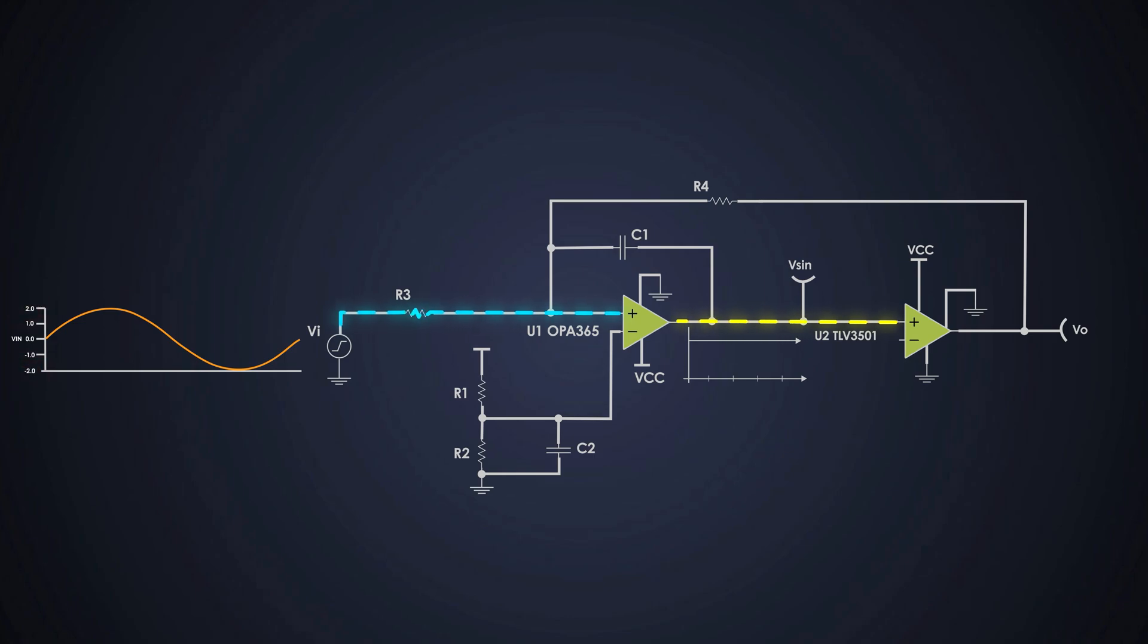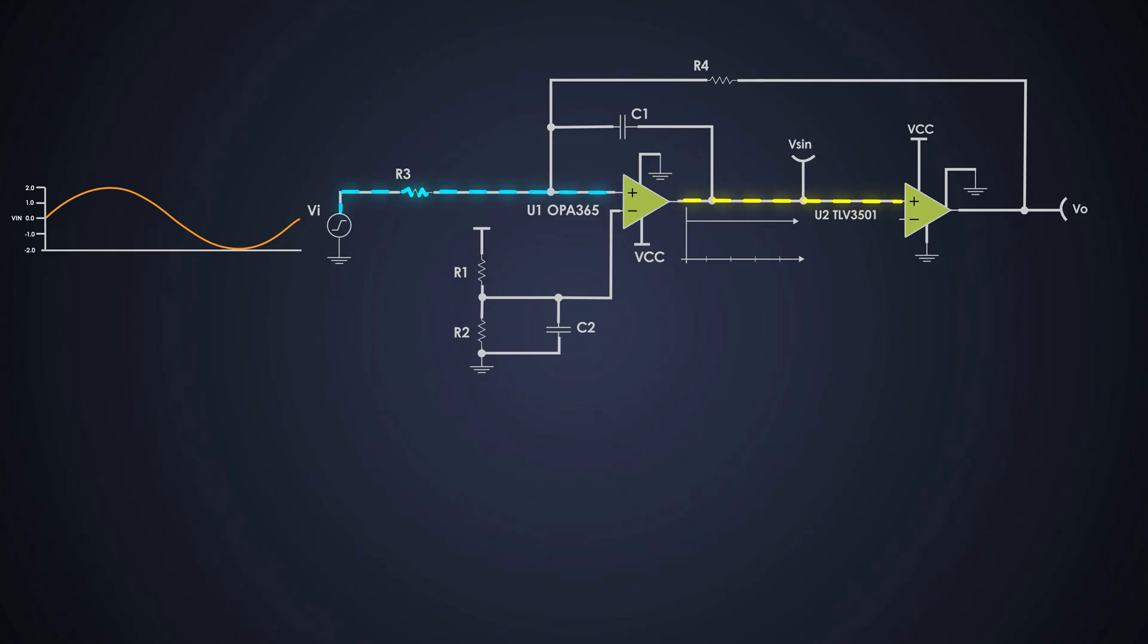To do this, we use an op-amp in an inverting configuration with a gain of minus 1.